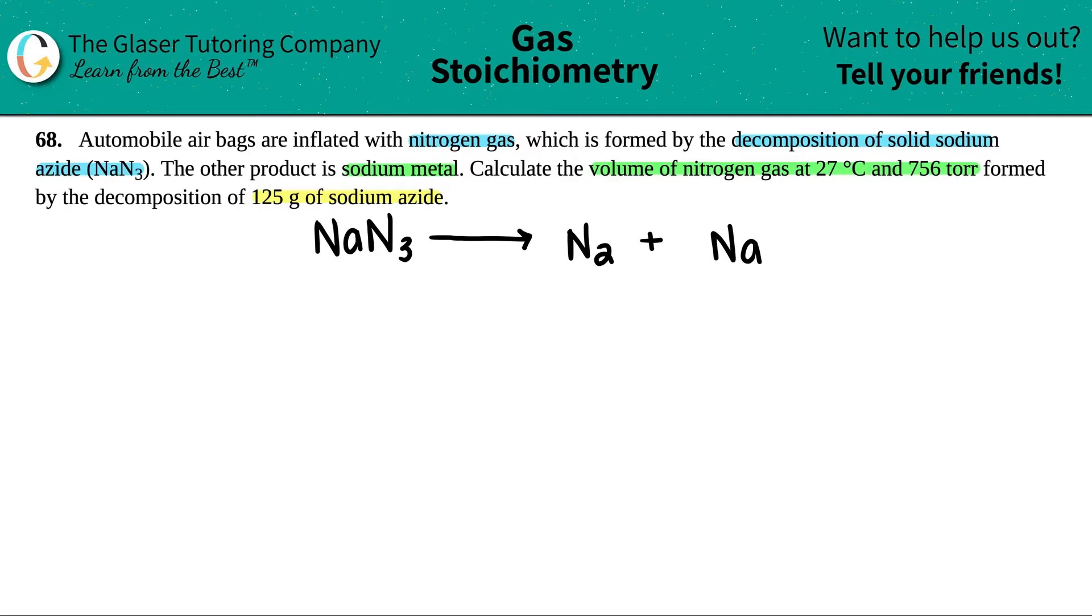Just writing the equation. Remember, you always got to make sure it's balanced. So if you want to pause the video, try to balance it and then check with my answer. There's three nitrogens on the left side, two nitrogens on the right side, so the easiest would just be to put a 3 in front of the N2 and a 2 in front of this one. There's two sodiums, so I'm going to put a 2 here and call it a day.